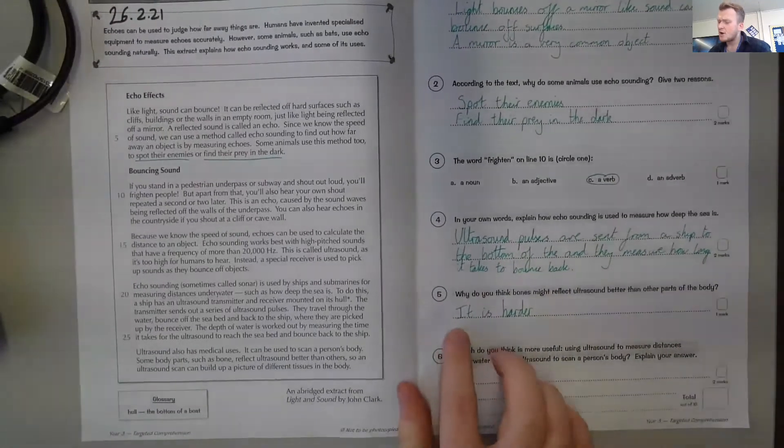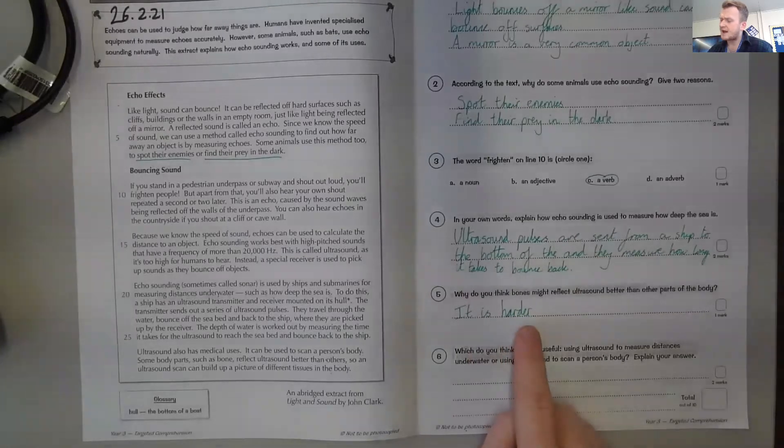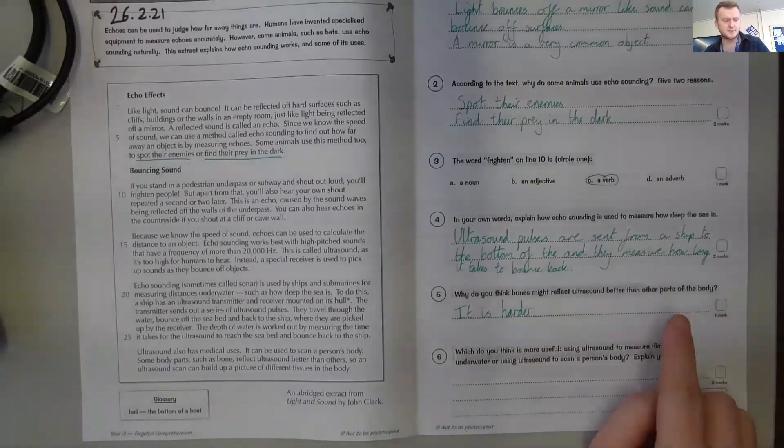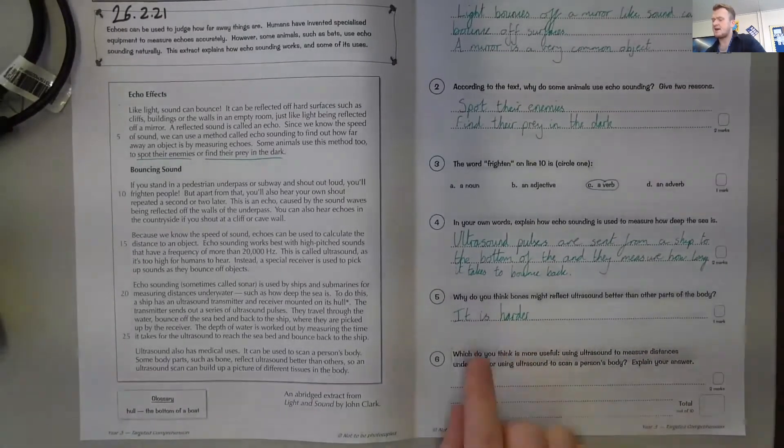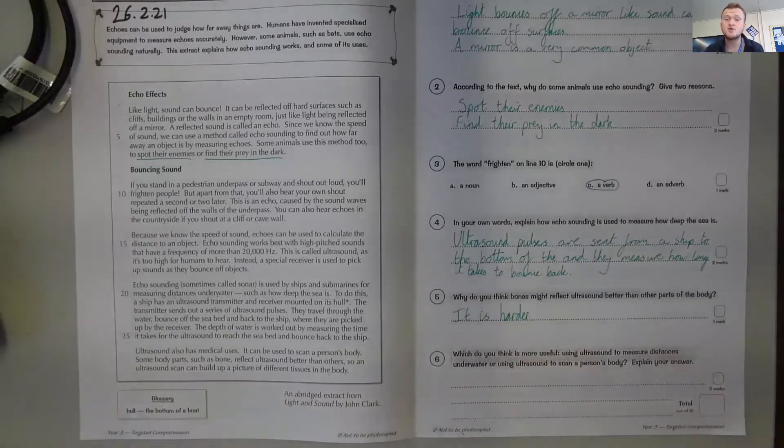Number five: Why do you think bones might reflect ultrasound better than other parts of the body? That one would be it is harder. Bones are harder, so it's easier for it to bounce off of.